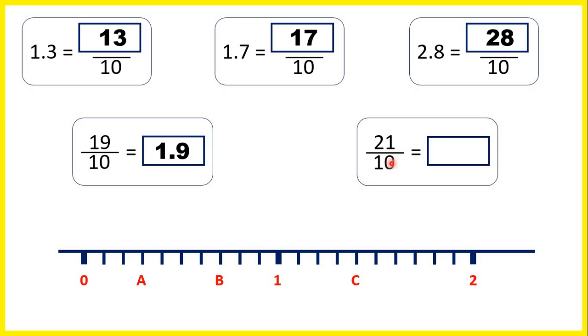And for 21 tenths, we can make 2 wholes out of 20 tenths, and then we'll have 1 tenths left over. So that's 2.1.